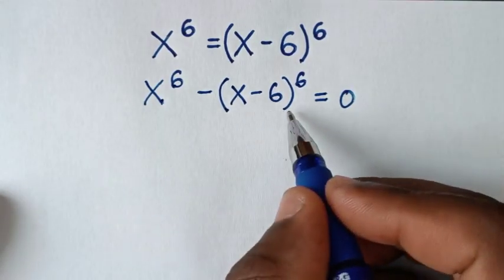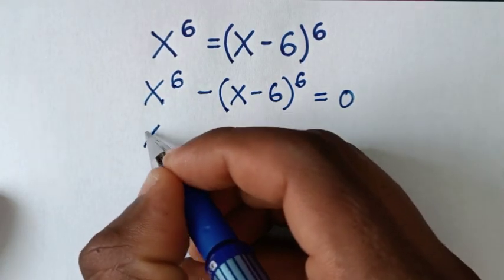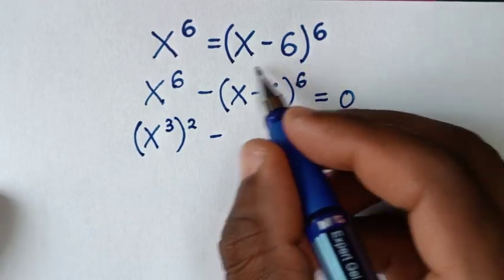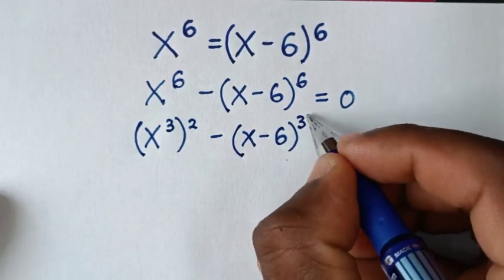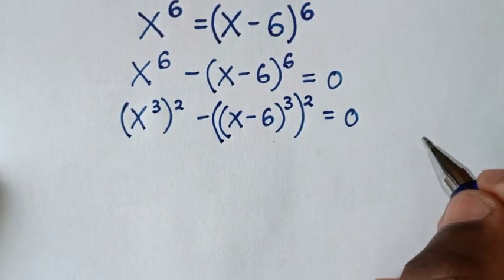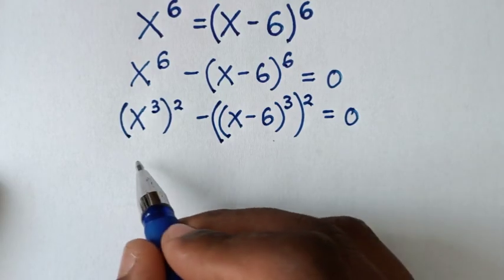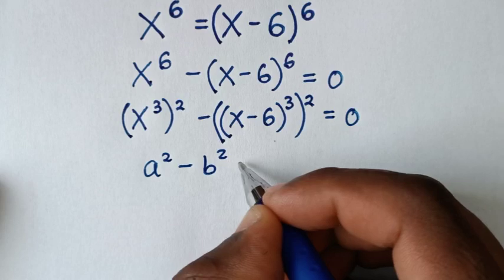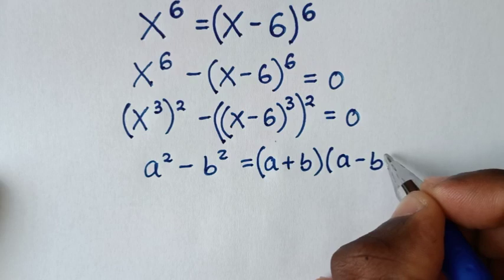Then in the next step, from the left side we'll write it in the form of a perfect square: x power 6 as x power 3 bracket squared, then minus x minus 6 bracket power 3 bracket squared, is equal to 0. This is now in the form of a perfect square, so we'll apply the rule a squared minus b squared is equal to a plus b bracket times a minus b bracket.